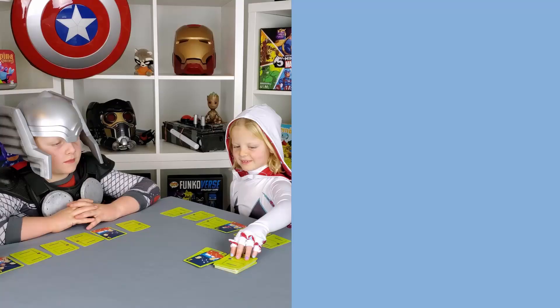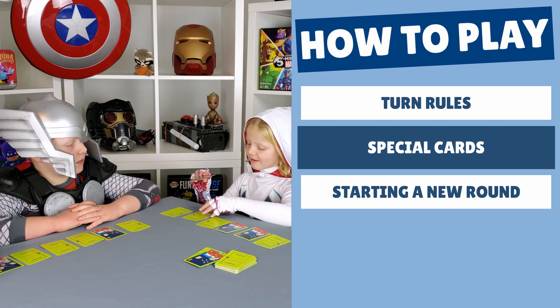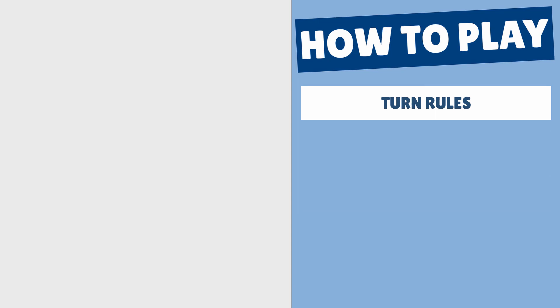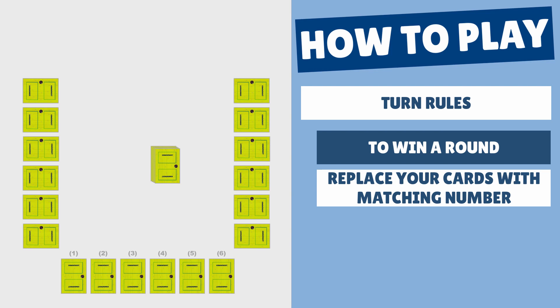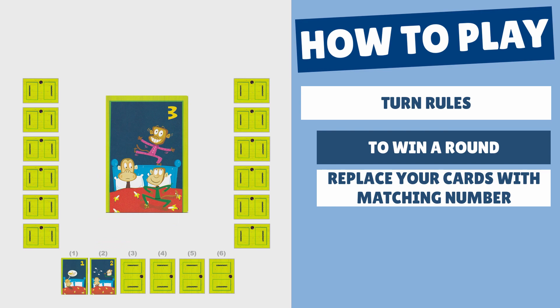So how do we play the game? First we'll talk about the rules for each turn. Then we'll go over some of the special cards you might get. And last we'll show you how to start a new round. To win the round, you need to replace all the face down cards in front of you with the number card that matches the spot. So if you have six cards in front of you, you will need to get a one, two, three, four, five, and six to win the round.